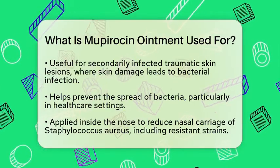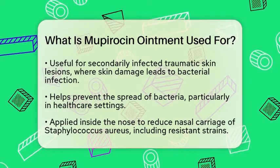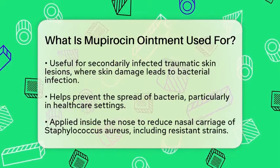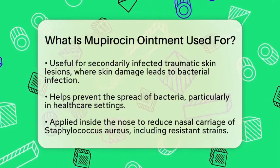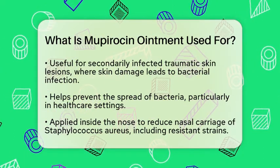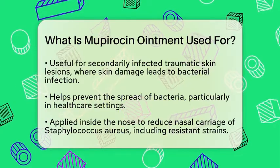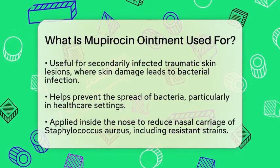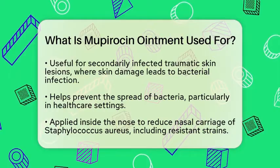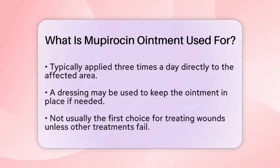In addition to treating infections, Mupirocin ointment can help prevent the spread of bacteria. For example, it is sometimes applied inside the nose to reduce the nasal carriage of Staphylococcus aureus, including the strain known as Methicillin-resistant Staphylococcus aureus (MRSA). This is especially important in healthcare settings where infections can spread easily.